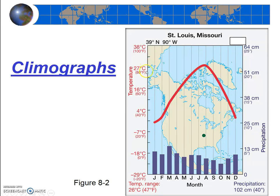If this station was in the southern hemisphere, it would be inverted. The warmest months would be in the outer six months — January, February, March, October, November, December — so it would look more like this if you follow my cursor. The warmer months would be on the outside and the middle six months would be the cooler ones.